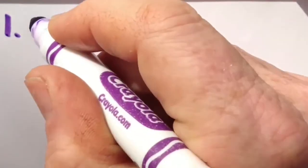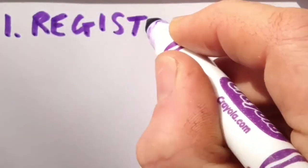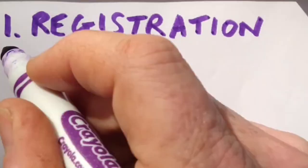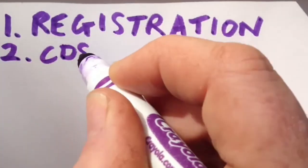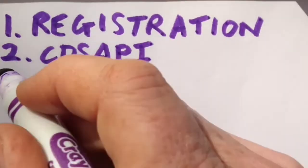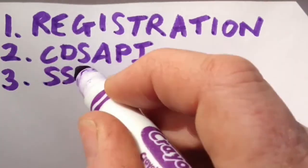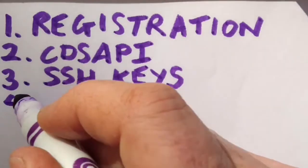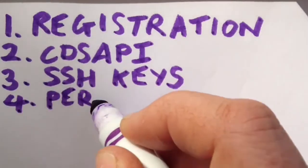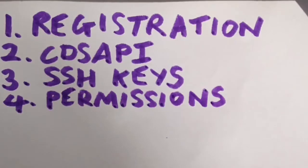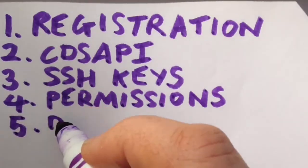There are four steps that we have to undertake, just once. The first consists of registration on the CDS site. The second step is to install the CDS API package in Python that we will use to download the data. We then need to set up the SSH keys, which essentially avoids the need to type a password each time. Last but not least, we need to go to the website once to tick the box to allow permissions to download the data.